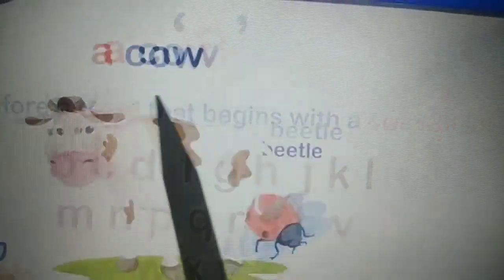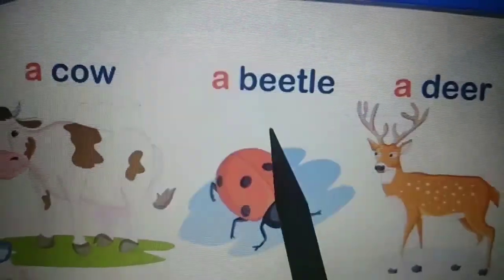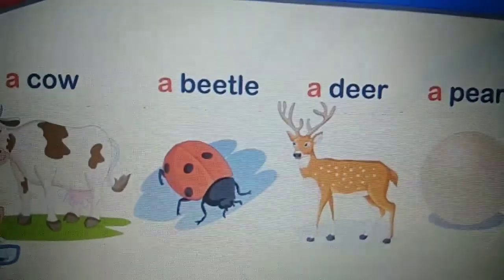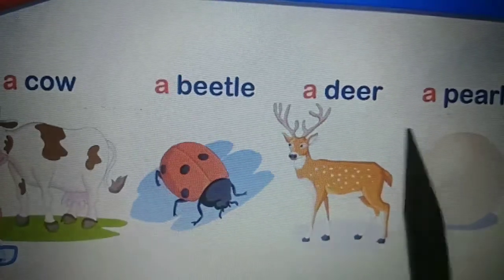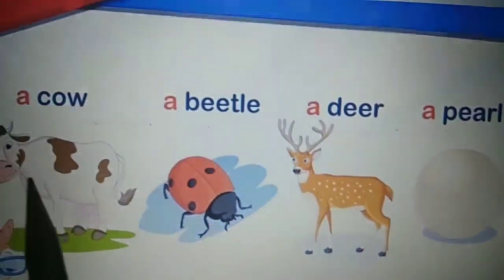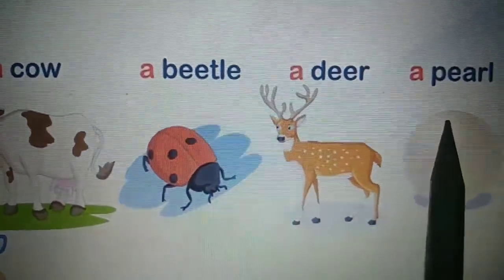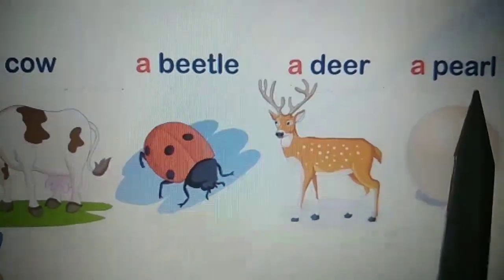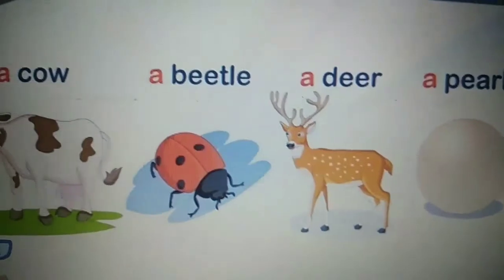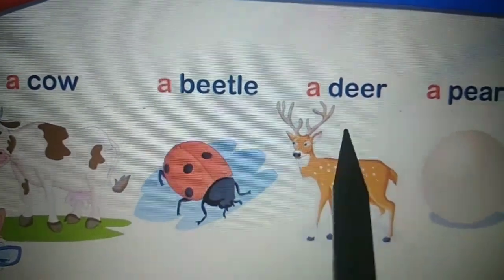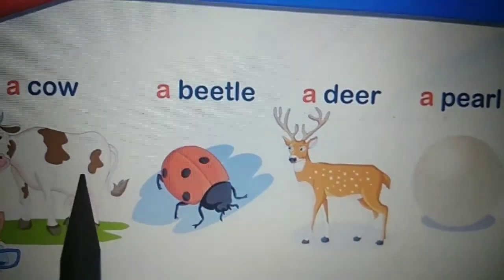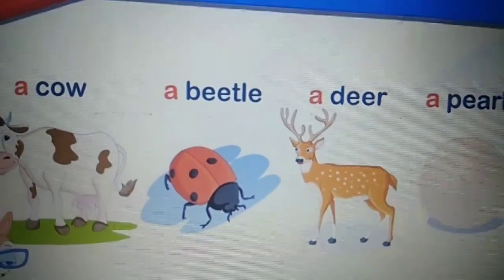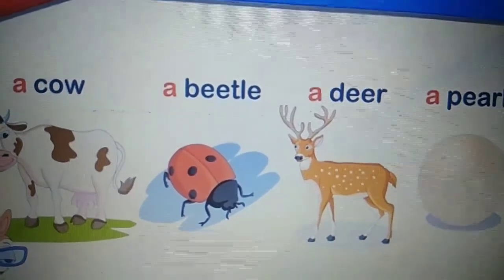Let's see with examples: a cow, a beetle, a deer, a pearl. Here you can see in all four examples that cow, beetle, deer, pearl — all these are beginning with consonant letters. Here C, here B, here D, here P. All the letters are consonants. So before a consonant we use the article A.